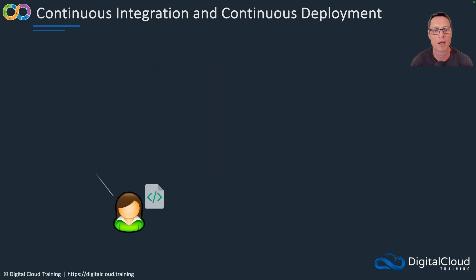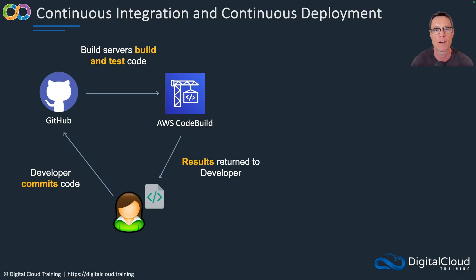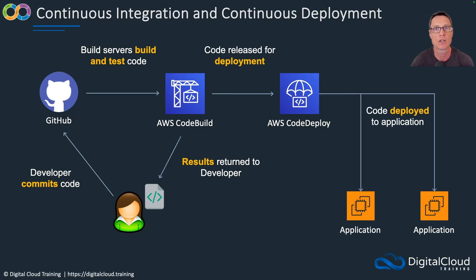Putting this all together: a developer commits and pushes code up to a GitHub repository. An event is triggered which pushes that code through to CodeBuild for build and test — perhaps compiling the code and running some tests. Feedback can come back to the developer, and if needed the developer makes updates and continues the first cycle — this is the continuous integration piece. Only if and when the code is successful at the build and test stage will it go through to the deployment service, which in this case is AWS CodeDeploy, which then deploys the updated code through to the actual running application.